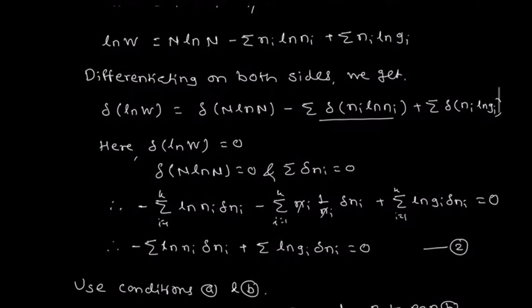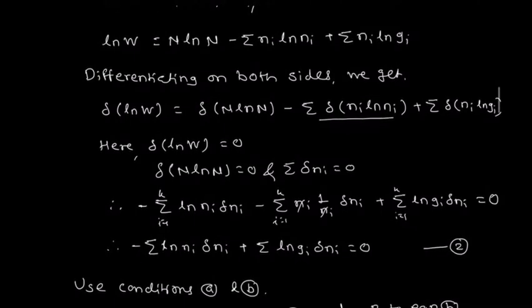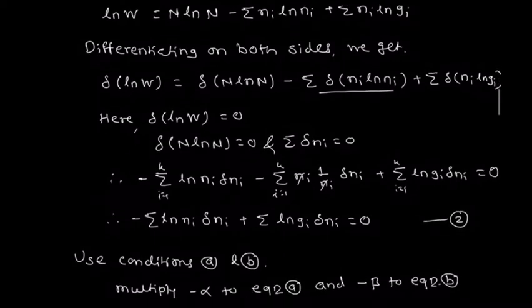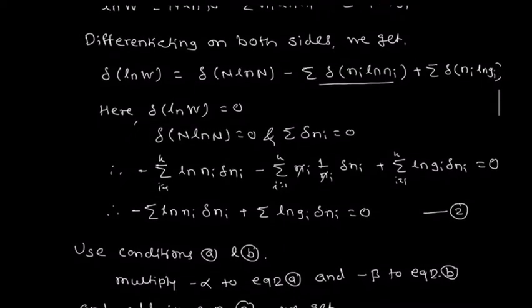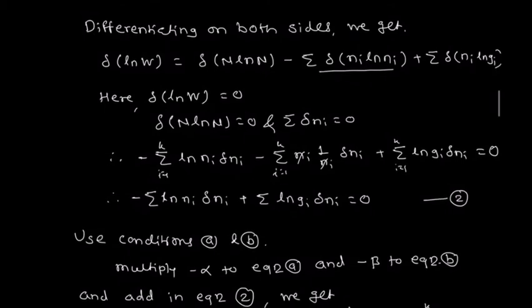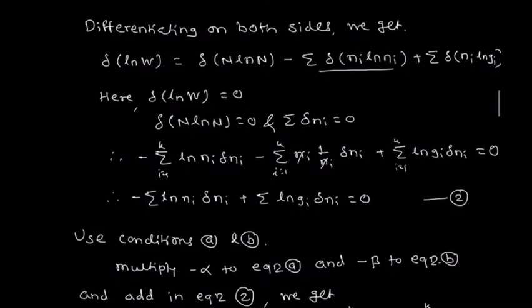Writing the two terms for equation 2: minus summation log(ni)·δni plus summation log(gi)·δni equals 0. Now we use conditions A and B. Condition A is: summation δni equals 0; multiply minus alpha to equation A. Condition B is: summation ui·δni equals 0; multiply minus beta to equation B.